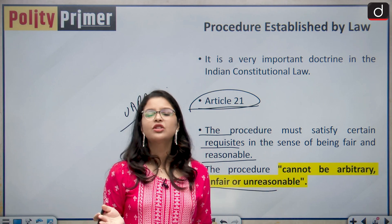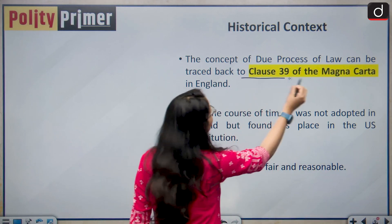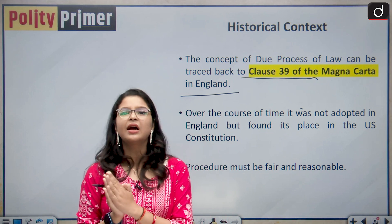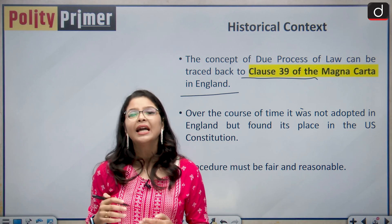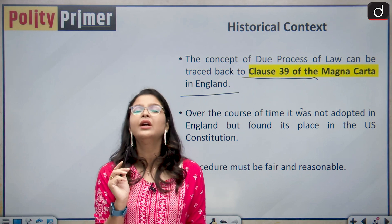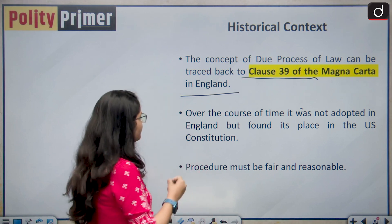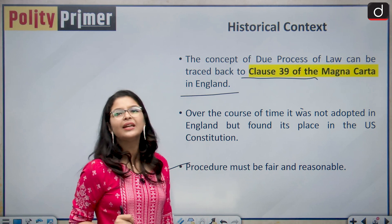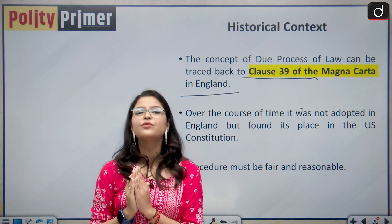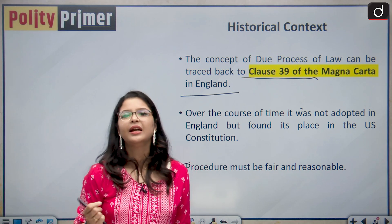The doctrine of due process of law finds its place in clause 39 of the Magna Carta in England. But as English jurisprudence evolved, it did not follow due process of law, which then found its place in the US Constitution through the fifth amendment. The procedure established by law is an English doctrine followed extensively in the Indian Constitution and explicitly mentioned in it.